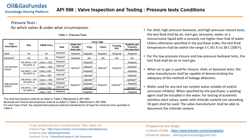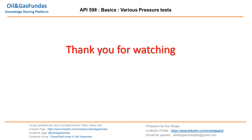Tables one, two, and three together provide details on which valve, which test, and what pressure to apply. Table number four covers the duration of the test for a particular valve, representing the minimum requirements that must be followed. Thank you for watching — see you in the next part.